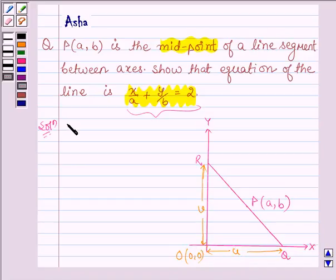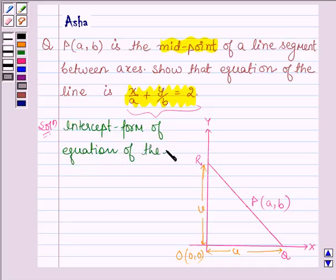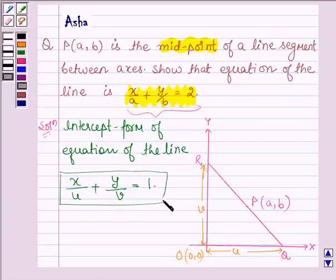Intercept form of equation of the line whose X intercept is U and Y intercept is V is given by X upon U plus Y upon V equals 1. Let us denote this equation by equation number 1.